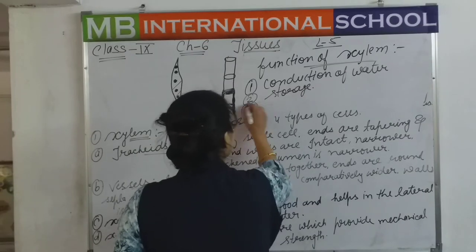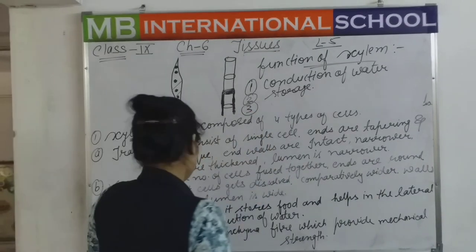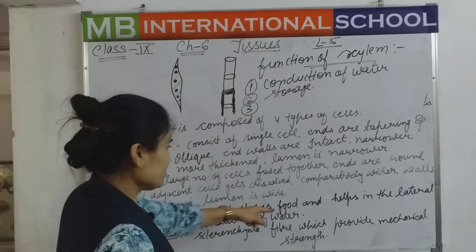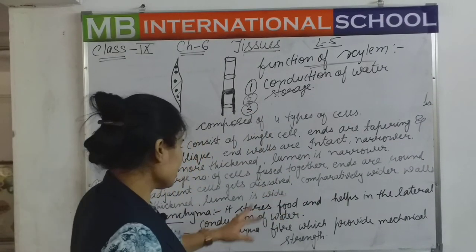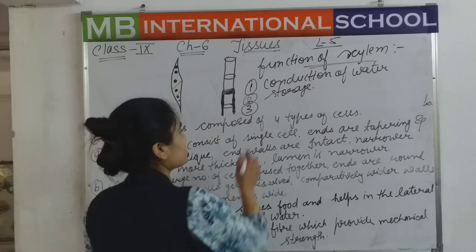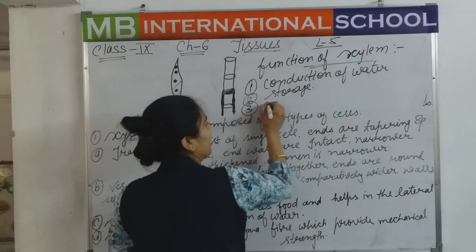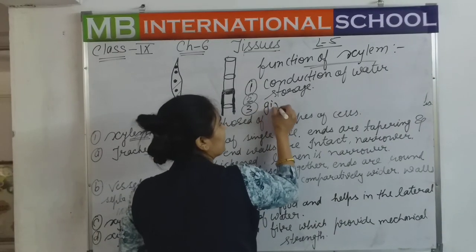The third function is storing food and helping in the lateral conduction of water. The fourth function is giving mechanical strength to the plant.